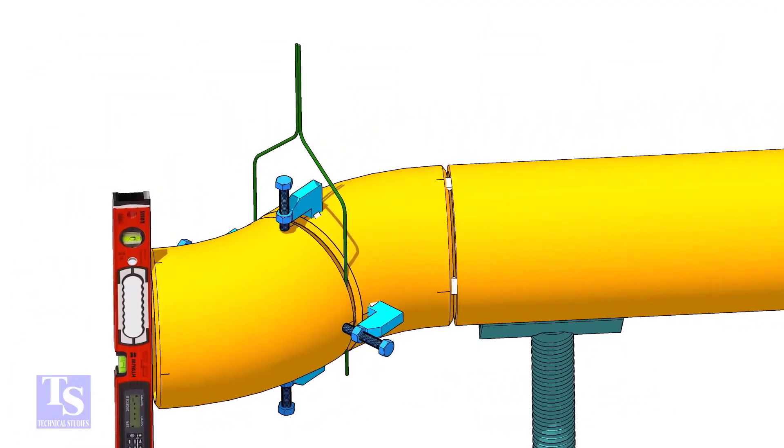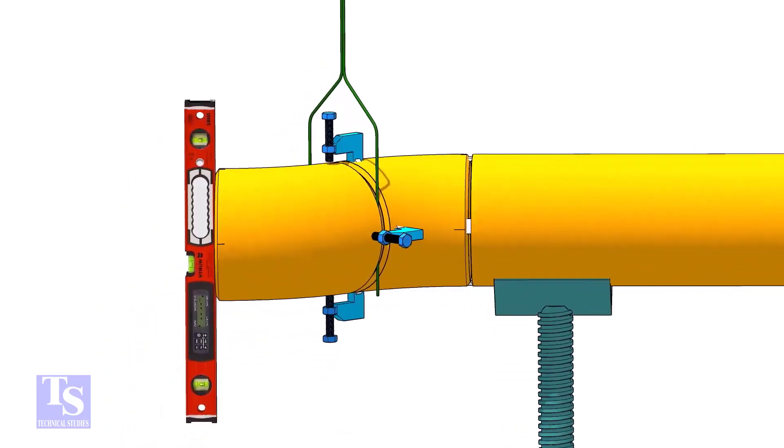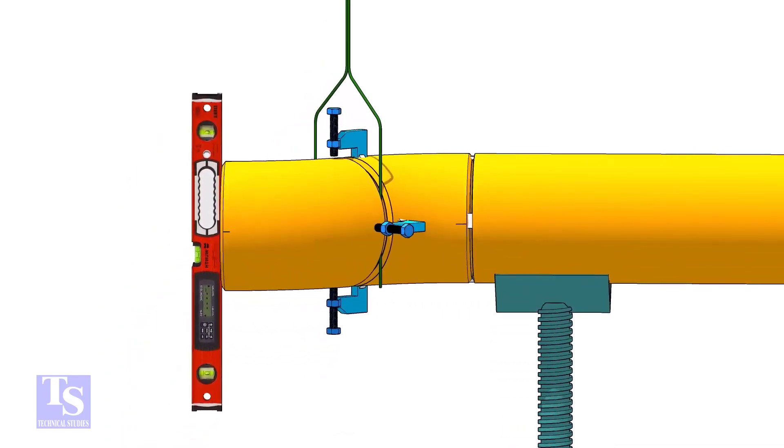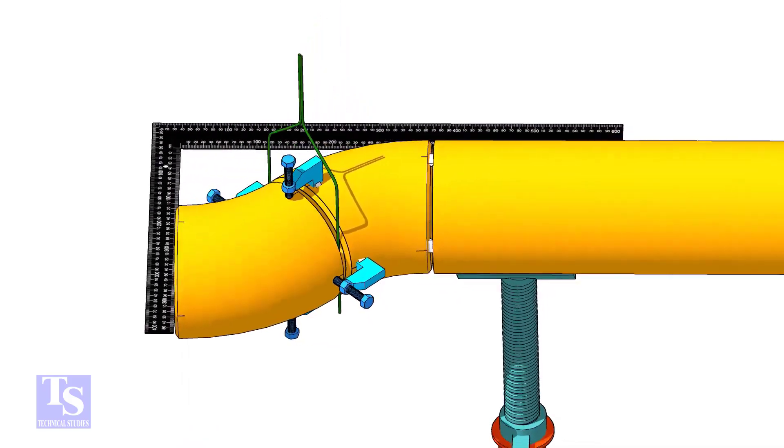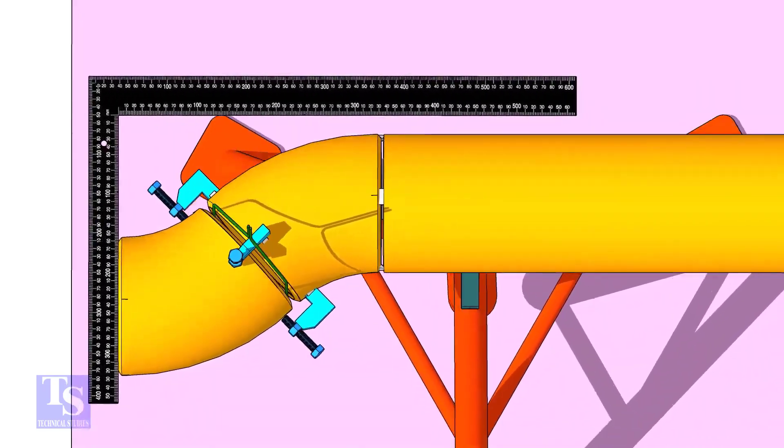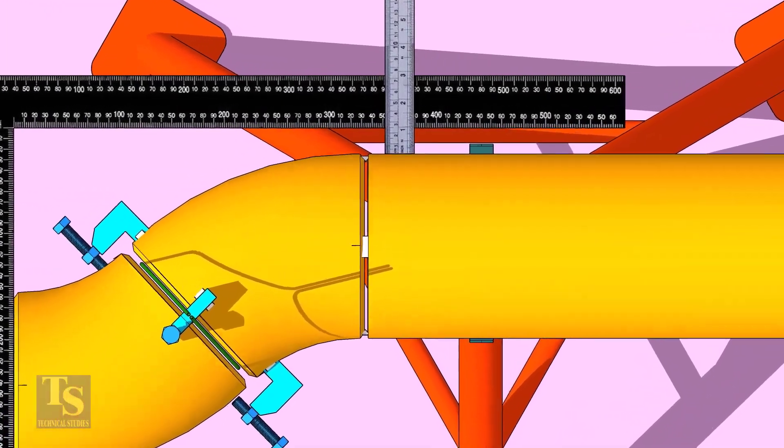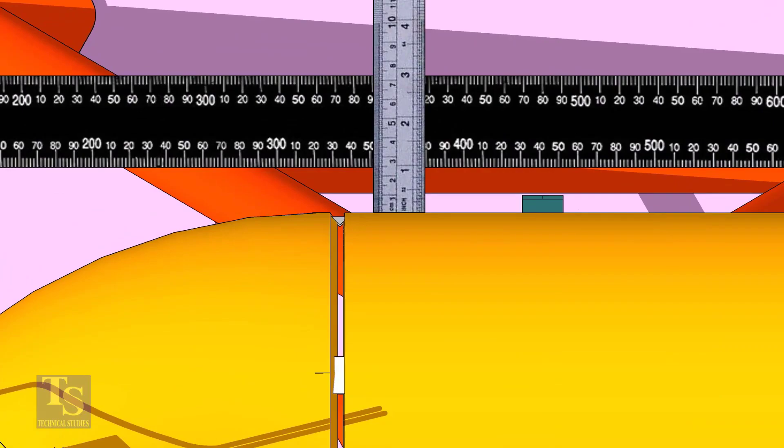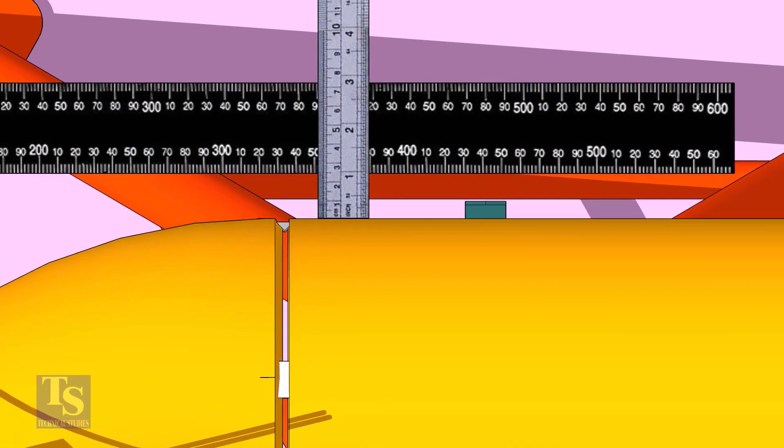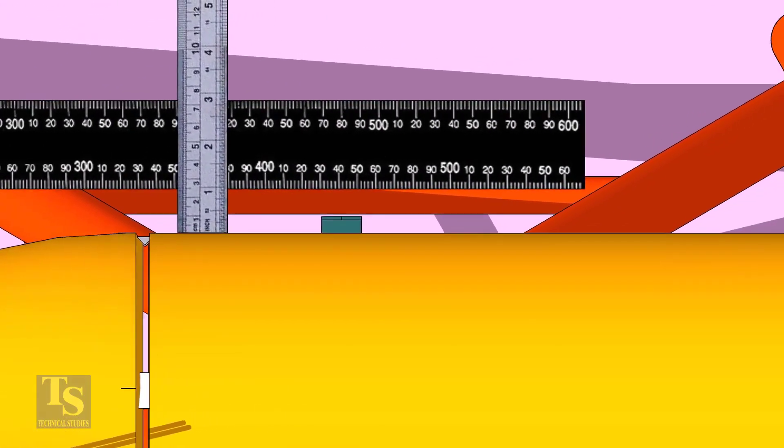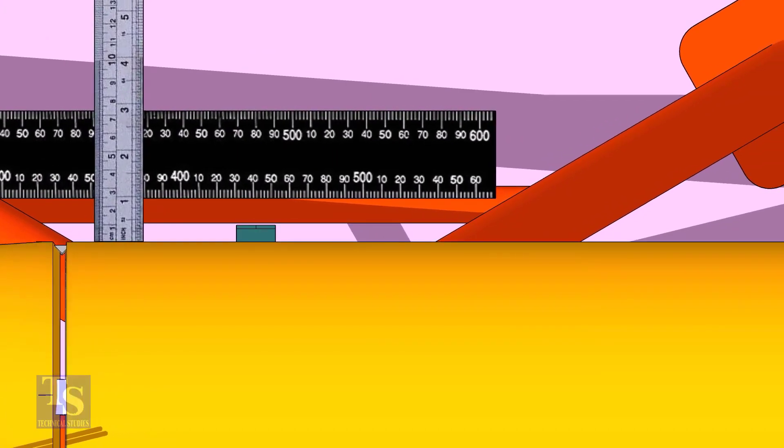Check if the face is level. Put a large right angle on the face of the elbow as shown and check the distance between the pipe and the right angle. If both the measurements are the same, tack weld on the top and bottom side of the joint.